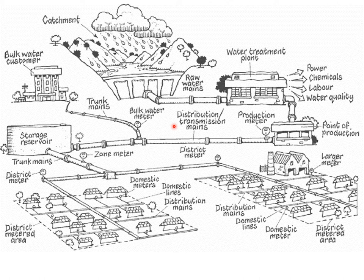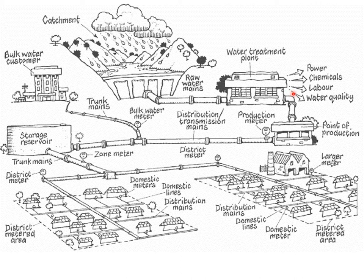Water is obtained from lakes, rivers, and check dams in bulk and sent for city-level distribution. Before distribution, water must be treated in water treatment plants to meet potable water standards. After treatment and quality checking, it is sent to central control stations known as points of production, where water distribution is controlled and metering comes into picture.